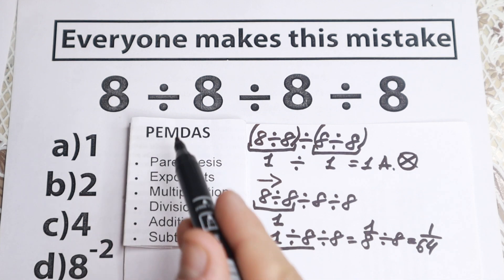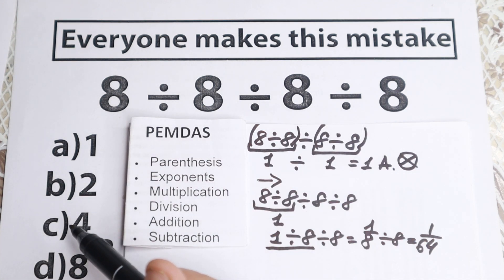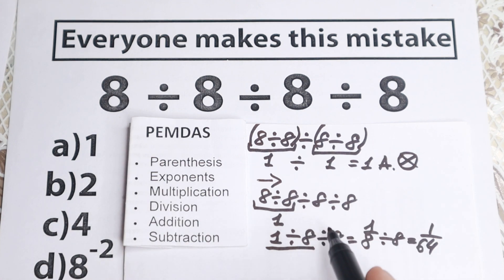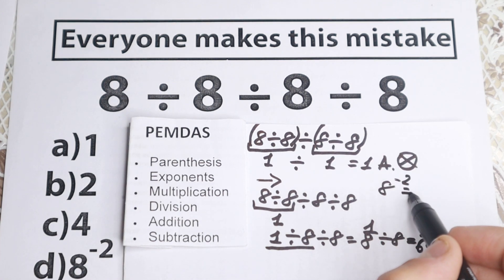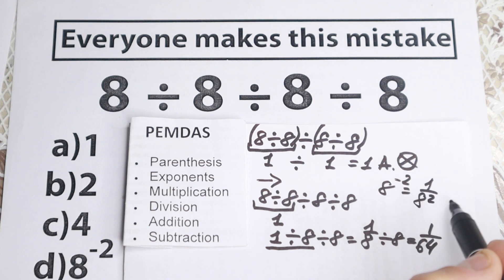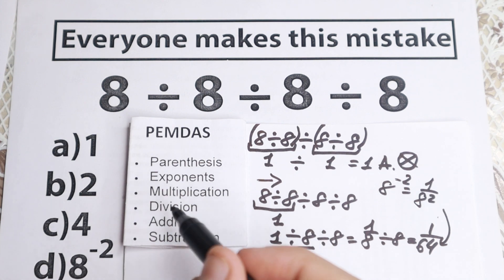Option B is incorrect, so it doesn't feel like the answer is 2 and 4 as well. But this one is correct using PEMDAS order, so 1 over 64. But what about option? We have right here a very, very different answer. So we have 8 to the power minus 2. But if you write it 8 to the power minus 2, it is like 1 over 8 square, which is absolutely the same as right here.